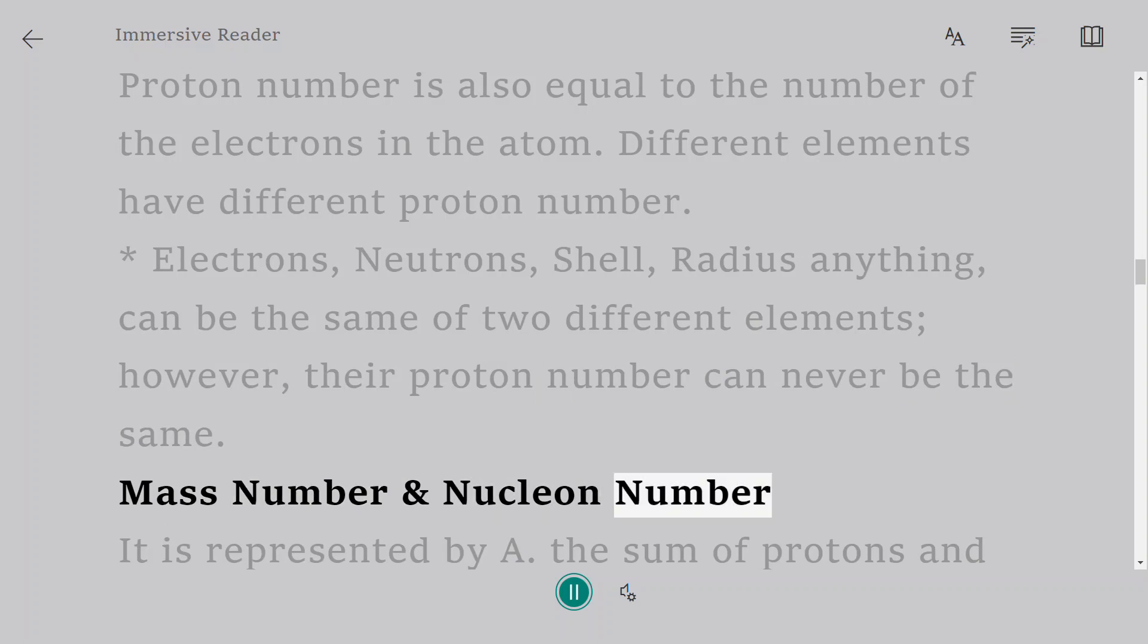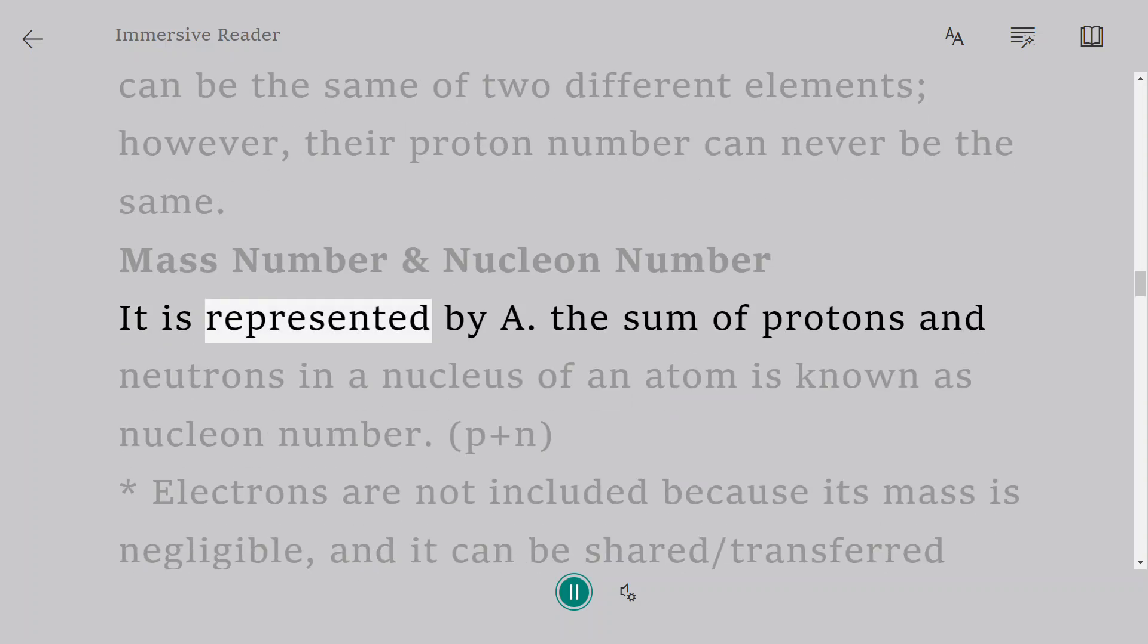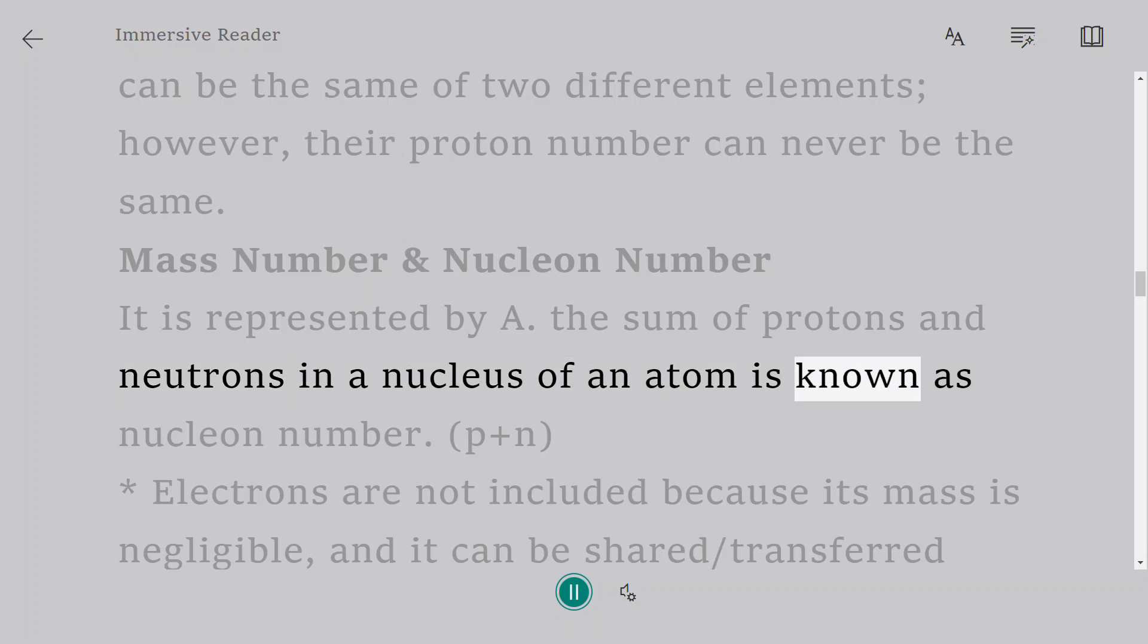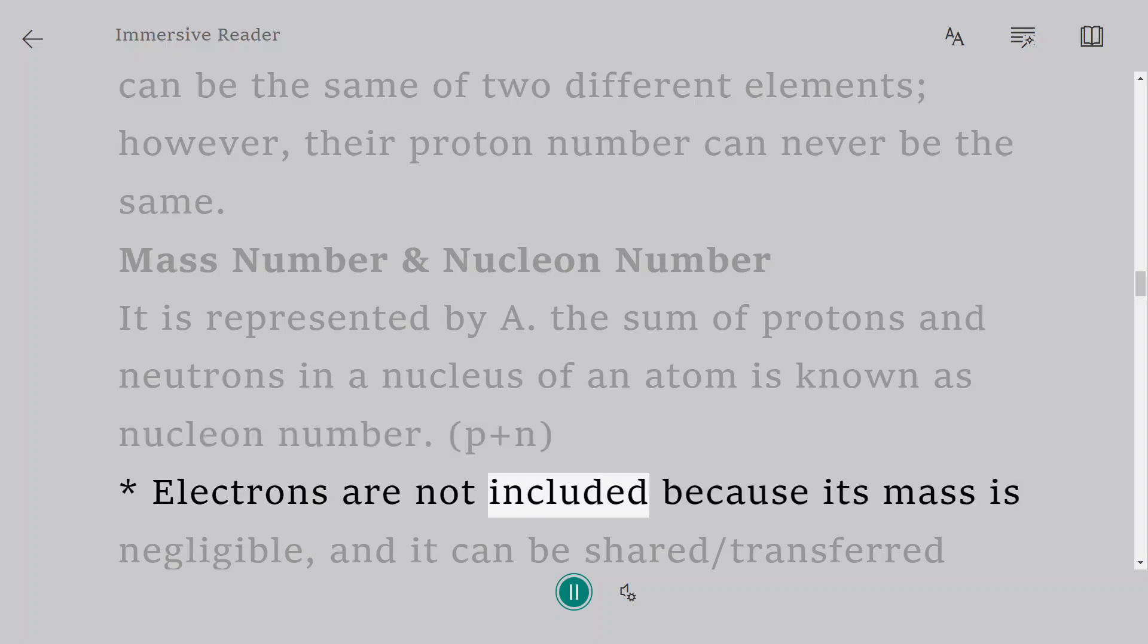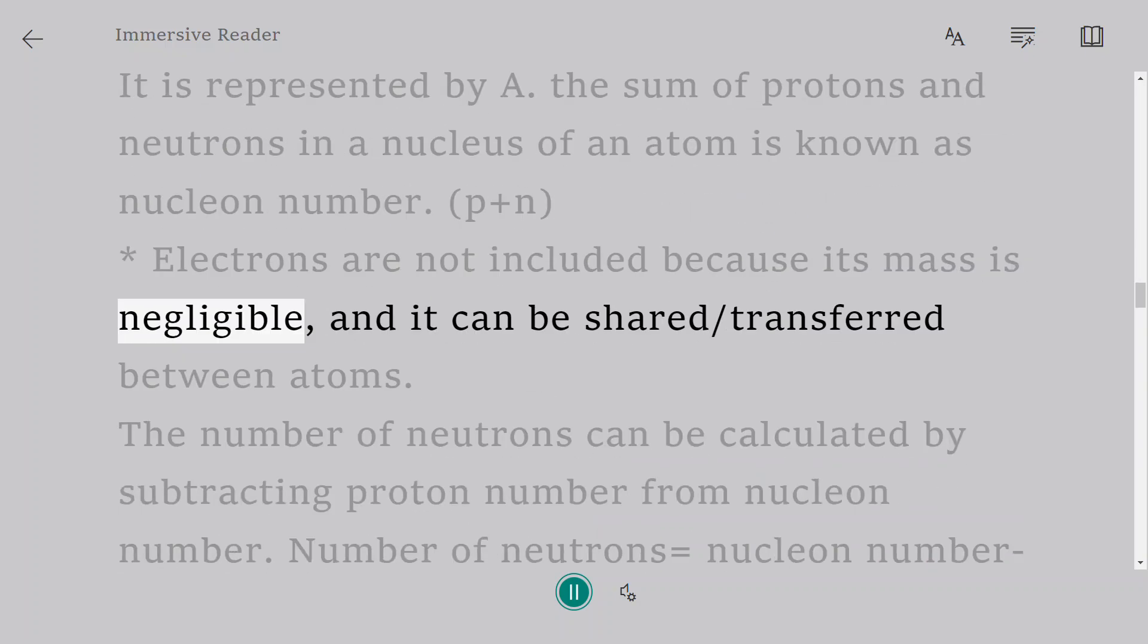Mass number and nucleon number: It is represented by A. The sum of protons and neutrons in a nucleus of an atom is known as nucleon number, P plus N. Electrons are not included because their mass is negligible, and they can be shared/transferred between atoms.